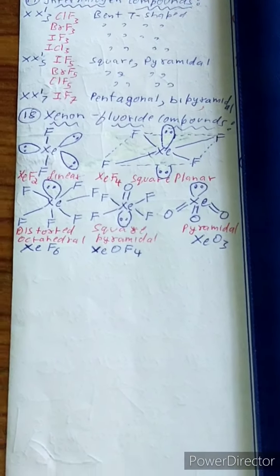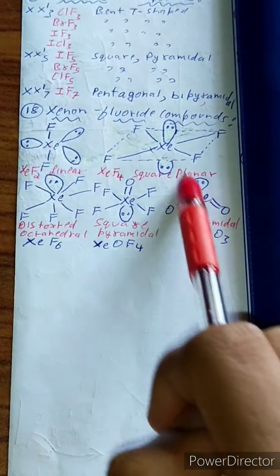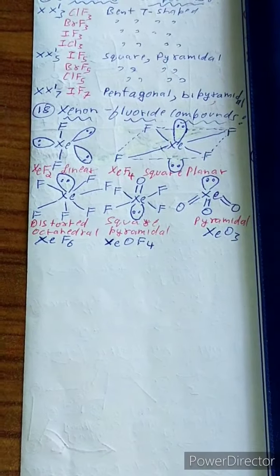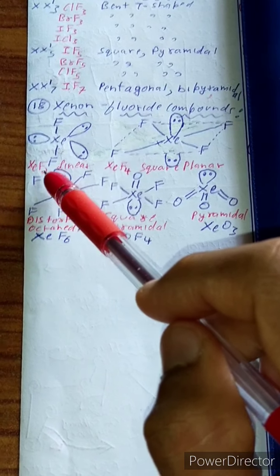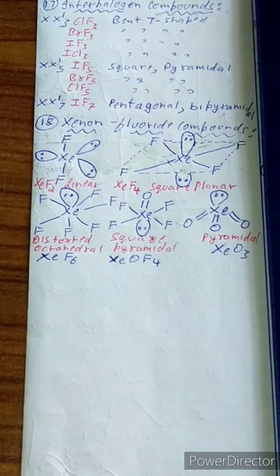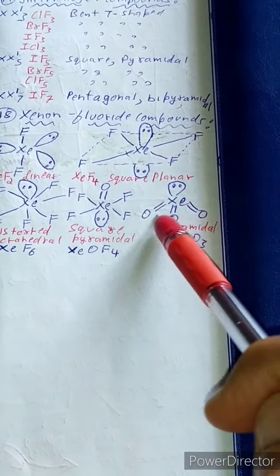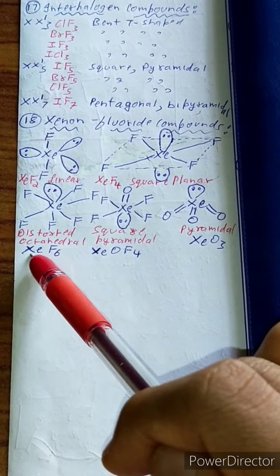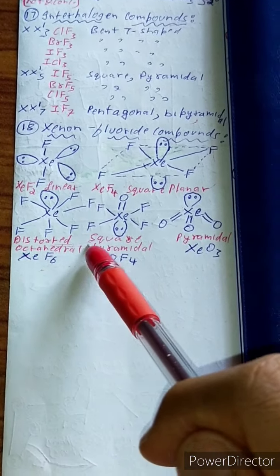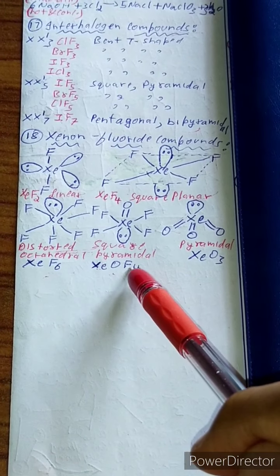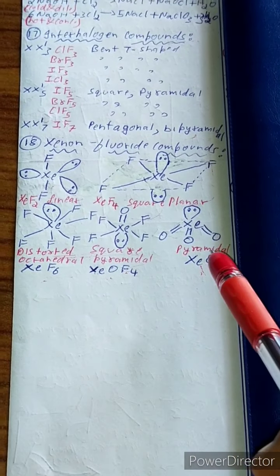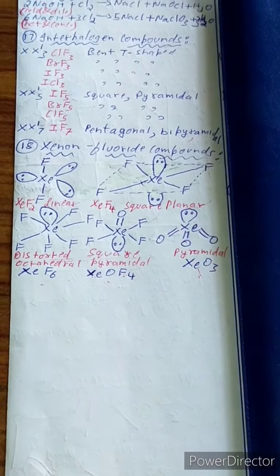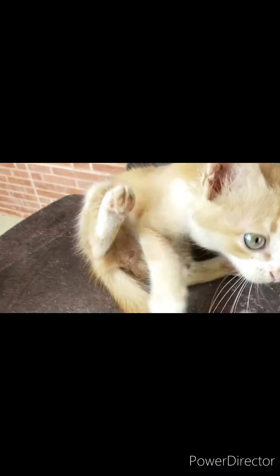Xenon fluoride compounds: XeF₂ (xenon with three lone pairs and two fluorines) — linear structure. XeF₄ — square planar. XeF₆ — distorted octahedral. XeOF₄ — square pyramidal. XeO₃ — pyramidal. If you like this video, hit the bell icon and subscribe button to be notified of all upcoming videos, which are fully free.